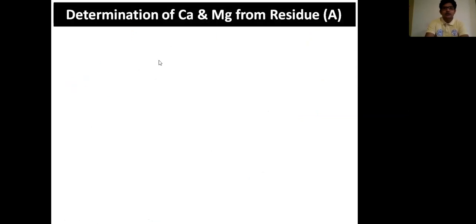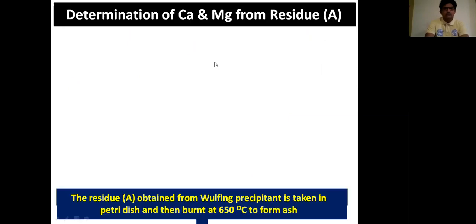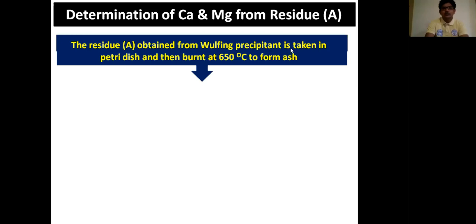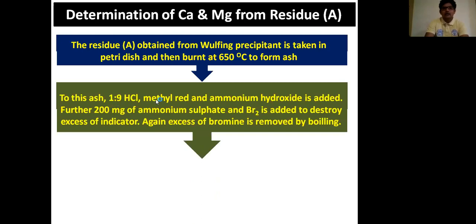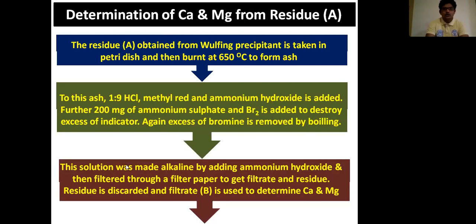For estimation of calcium and magnesium from residue A: the residue A obtained from wolfing precipitant is taken in a petri dish and burned at 650°C to form ash. To this ash, dilute HCl, methyl red and ammonium hydroxide are added. Then 200 mg of ammonium sulfate and bromine (Br₂) are added to destroy excess indicator. Excess bromine is removed by boiling. The solution is made alkaline by adding ammonium hydroxide, then filtered through filter paper. The residue is discarded and filtrate B is used to determine calcium and magnesium.